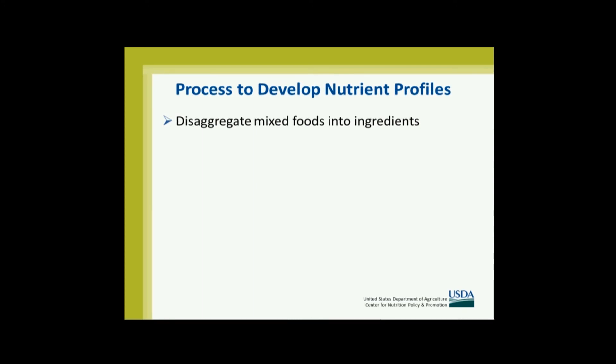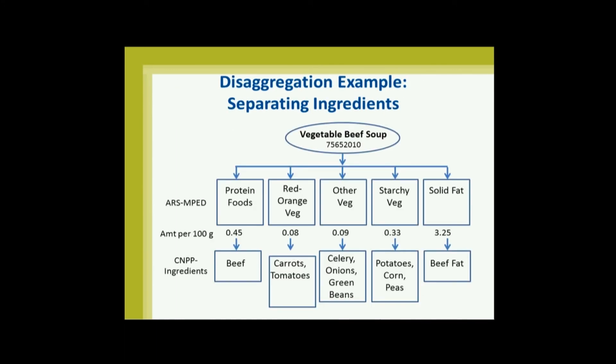We first disaggregate all the mixed foods that are consumed into ingredients. We use the NHANES data, Alana's wonderful FNDDS, and what used to be called the MyPyramid Equivalent Database — now called the Food Patterns Equivalent Database. Many of the foods we eat are mixed, not simple. So we disaggregate them to find out how many carrots, beef, celery, corn, and peas are in vegetable beef soup, for example. The MyPyramid Equivalent Database shows us the various classifications — protein foods, red and orange vegetables, other vegetables — by subgroup or group.